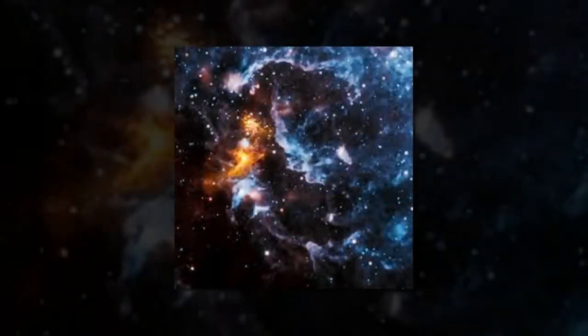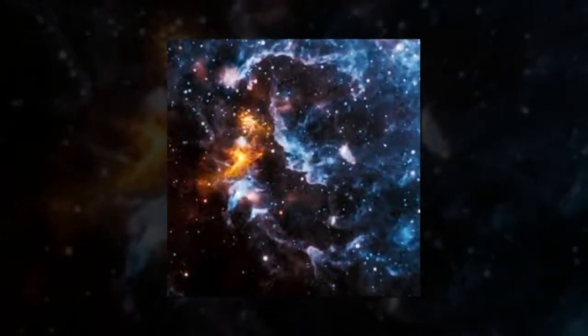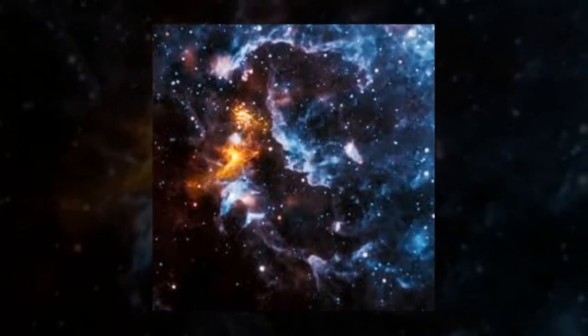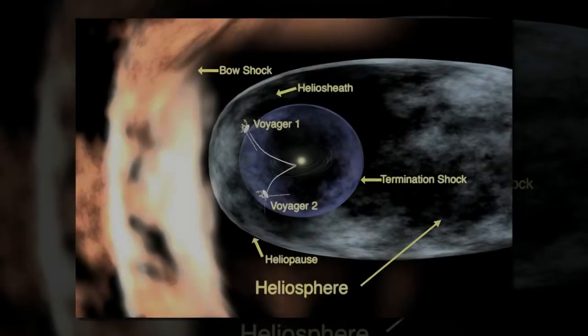Now, a new study uses IBEX data and simulations of the interstellar boundary, which lies at the very edge of the giant magnetic bubble surrounding our solar system called the heliosphere, to better describe space in our galactic neighborhood.